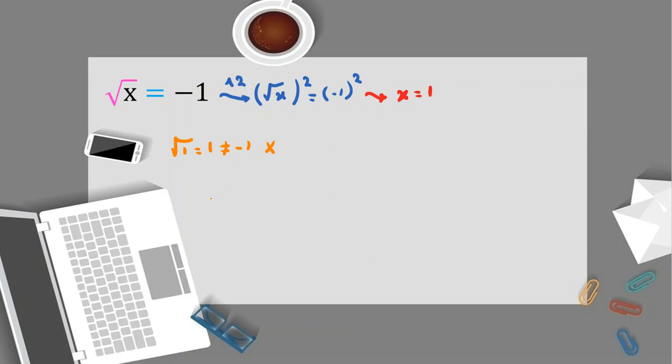Now let me tell you another one. Try to solve this as homework: cube root of x equals negative one.